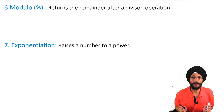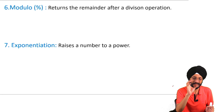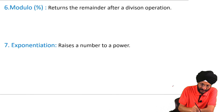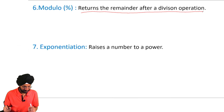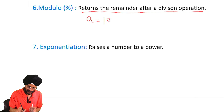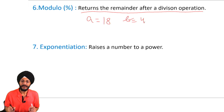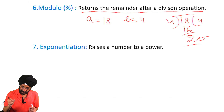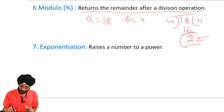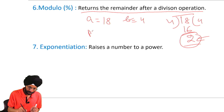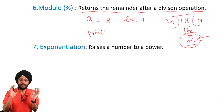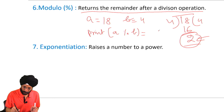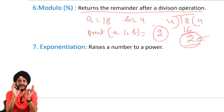Next is the modulo operator — one of the arithmetic operators in Python. It is like the percentage symbol in mathematics. It returns the remainder after a division operation. Suppose a is 18 and b is 4. When we divide 18 by 4, the remainder is 2. So when we use the print function with the modulo operator — print a modulo b — the output will be 2, because we get only the remainder.